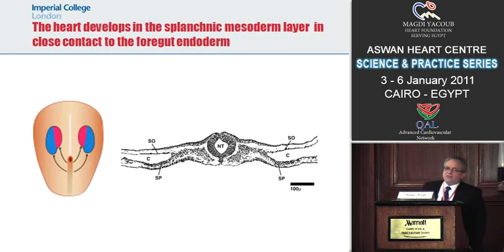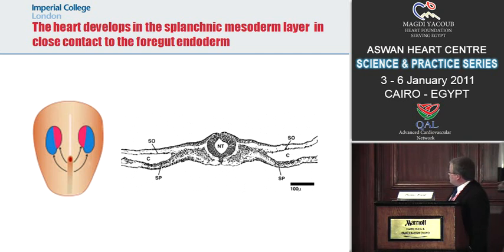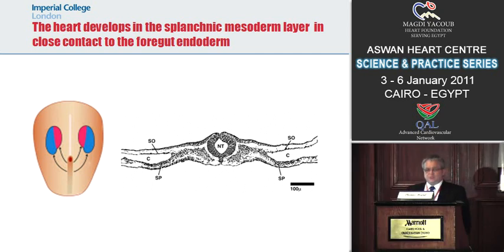What are the driving factors that specify the different heart field precursors? Shown here is this early heart field, and when we section this embryo we get a picture showing the cardiac precursors localized here. What should be made clear is that the underlying endoderm — the endoderm of the forming foregut — is in very close contact to these heart fields. This intimate contact plays a very important role, because the foregut endoderm is a source for inducing signals that specify the mesoderm to undergo cardiac differentiation.